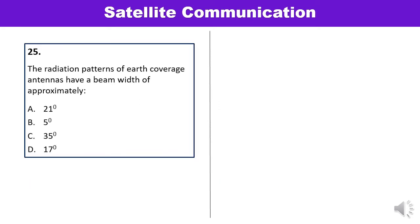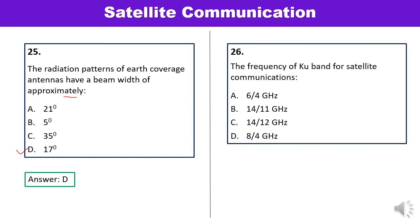Question 25: The radiation pattern of an earth coverage antenna has a beam width of approximately 17 degrees. Question 26: The frequency of the KU band for satellite communication? For uplink it is 14 GHz and for downlink it is 11 GHz, so the answer is 14/11. Correct.